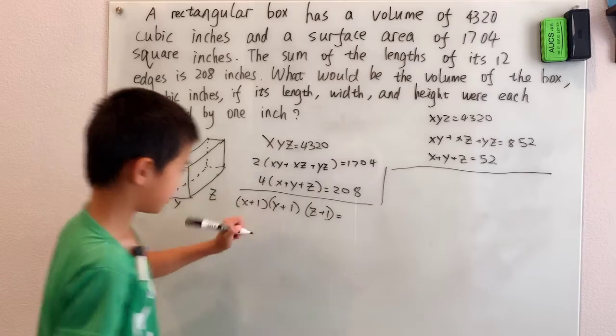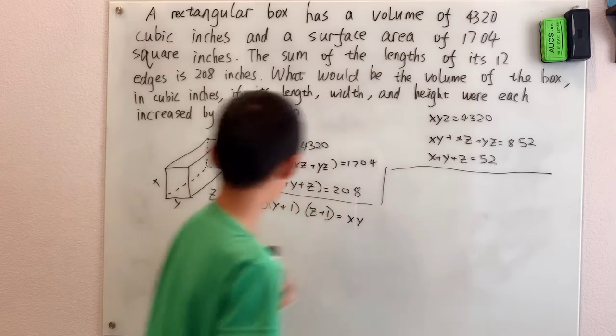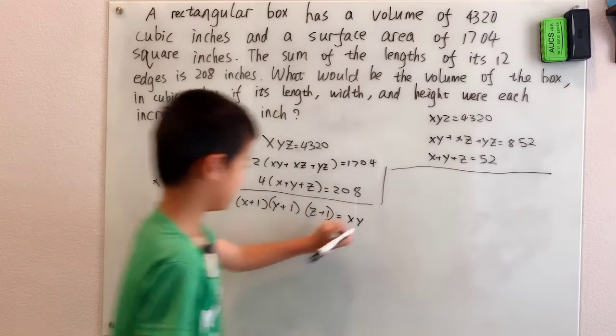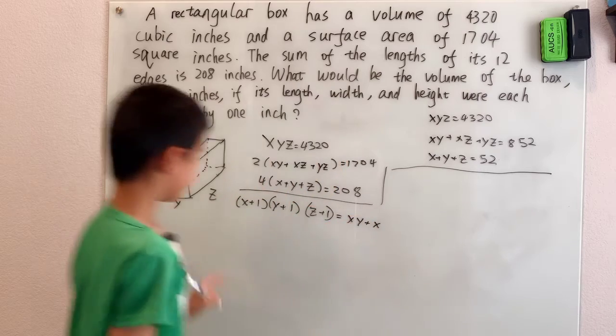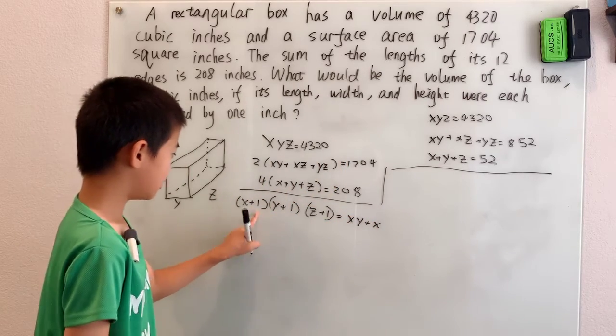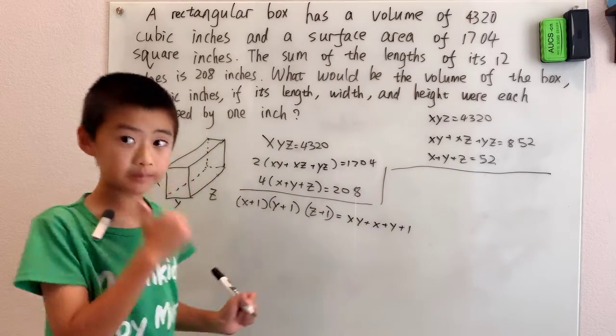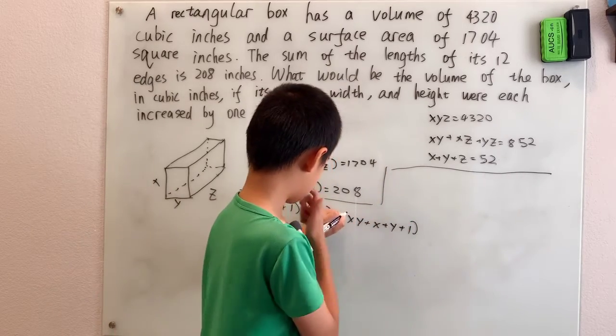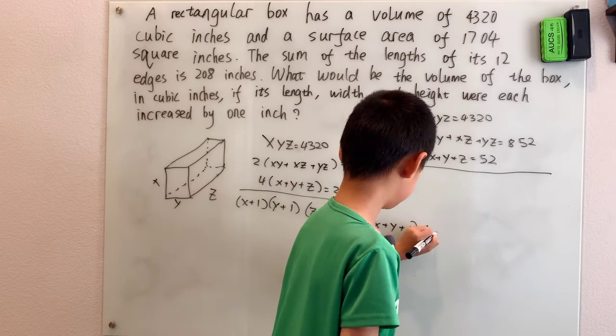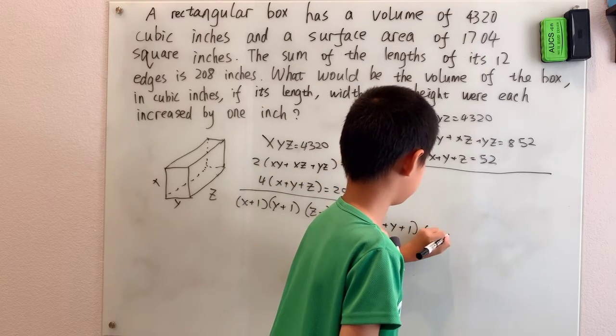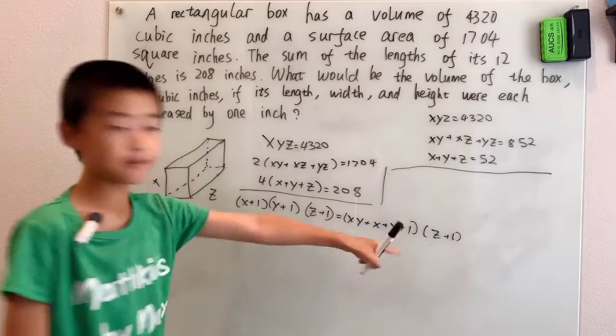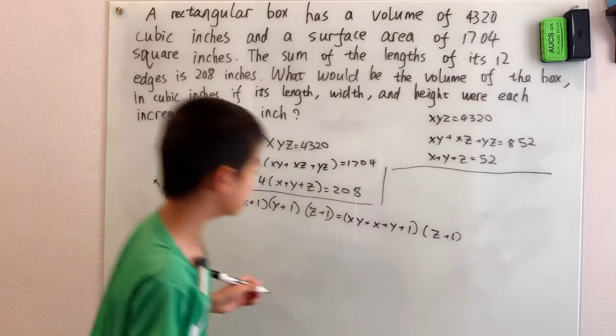Now, x times y, that's xy. x times one is just x, and one times y is y, and one times one is just one. So now, take that multiplied by (z+1).